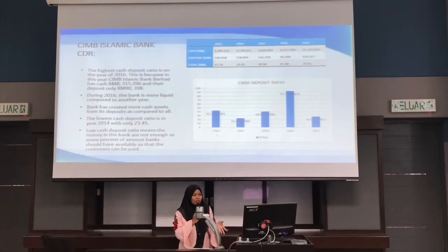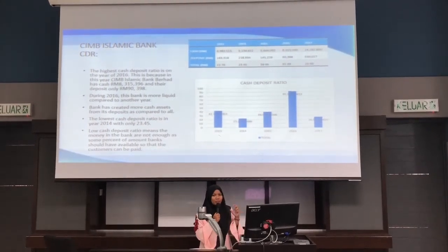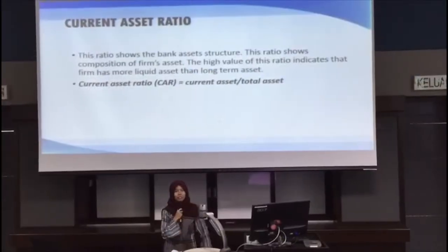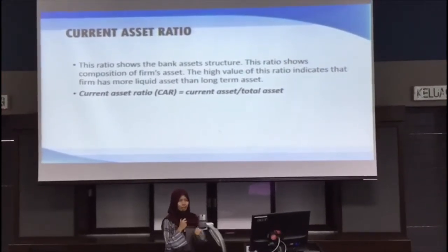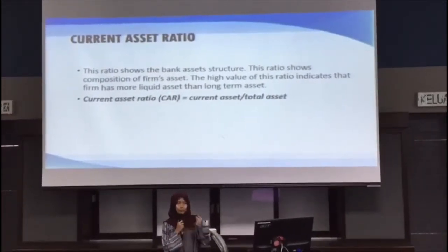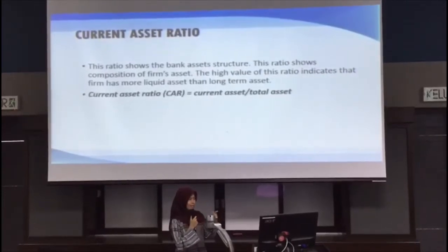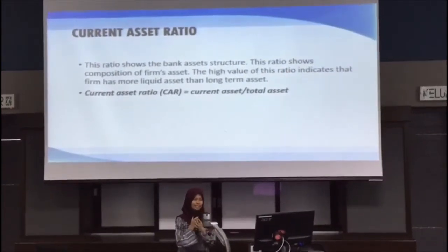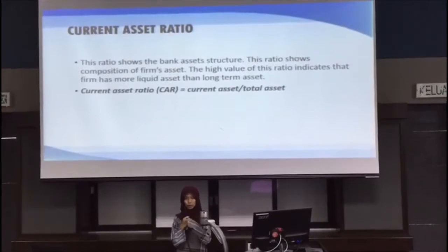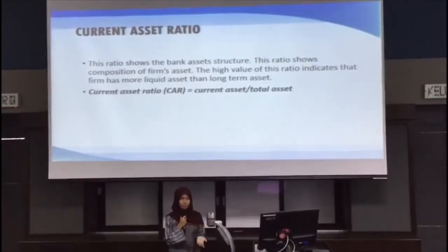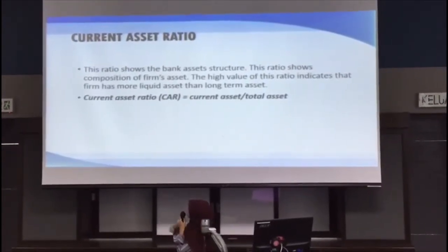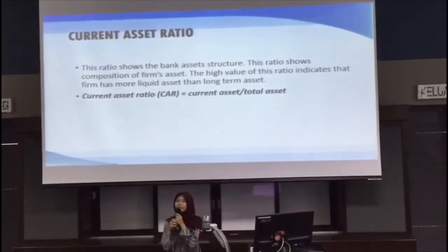A low cash deposit ratio means the money in the bank is not enough, as a certain percentage should always be available so that customers can be paid. Moving on, this is Aida Shafika, student number 240990. I will explain about CIMB Islamic Bank's performance on the aspect of liquidity using the current asset ratio. This ratio shows the bank's asset structure and the composition of the firm's assets. A higher value indicates that the firm has more liquid assets than long-term assets.